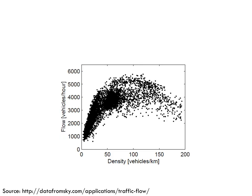Here's actual data from a roadway. Each point represents the number of cars passing through and the vehicle density. You can see that upside-down U shape, like we saw before.